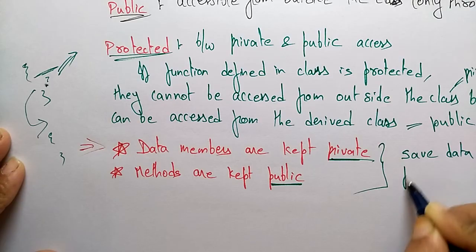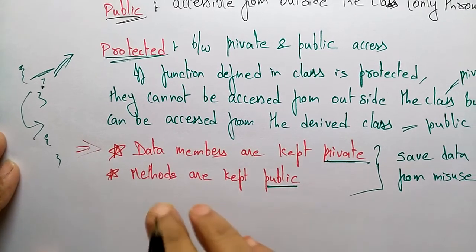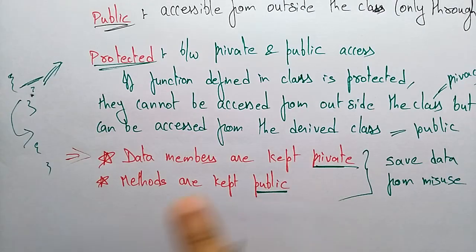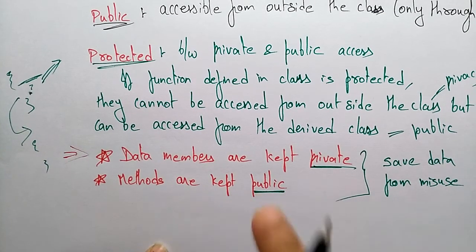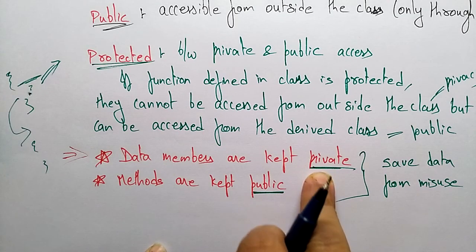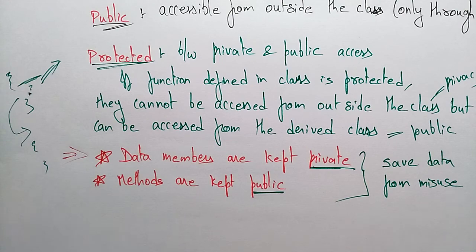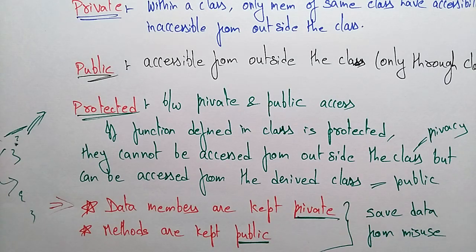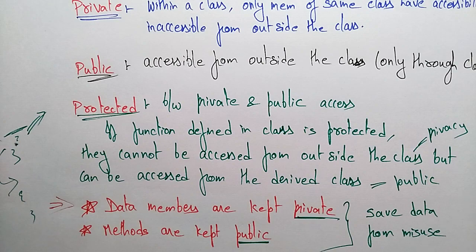By keeping data members private and methods public, you can save data from misuse. Always keep data members as private and methods as public. If you keep methods as public, anyone can access the method but with different values. This is one of the rules that data abstraction and information hiding follow when creating programs. In the next video we will see what member functions are present in classes. We have seen the access specifiers and data members; next I'll explain the member functions. Thank you.